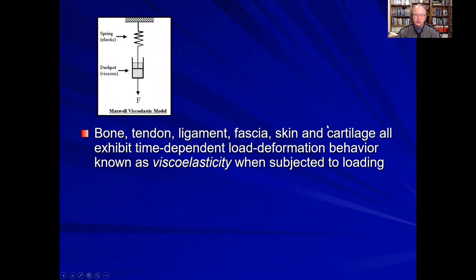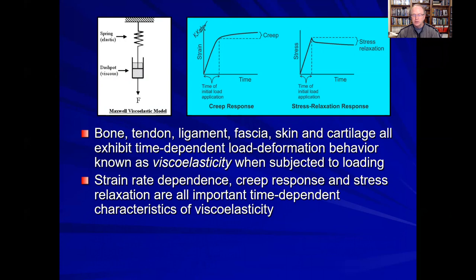We know from our last lecture on viscoelasticity that bone, tendon, ligament, fascia, skin, and cartilage are all viscoelastic structures that exhibit time-dependent behaviors. Strain rate dependence, creep response, and stress relaxation are all very important time-dependent characteristics of these viscoelastic structures within our bodies. Here we have the Maxwell viscoelastic model — a spring mechanism in series with a dashpot or viscous element — to show not only the spring-like characteristic of these viscoelastic materials, but also its fluid nature that shows time-dependent characteristics. Creep response is shown here, and stress relaxation response is shown on the right.